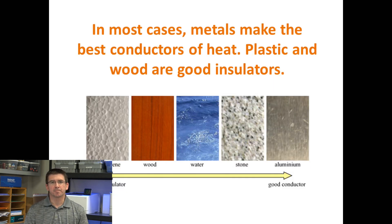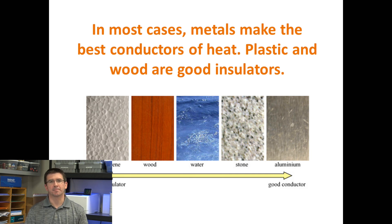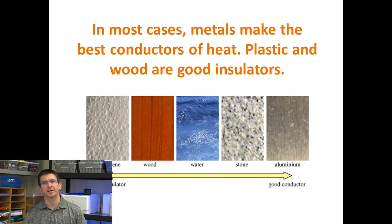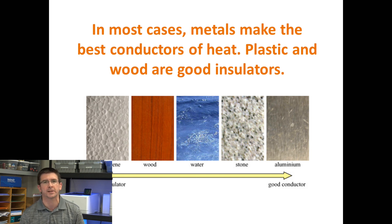In most cases, metals make the best conductors of heat, while things like wood and plastic make good insulators. Water is in the middle of our chart because in some cases it can conduct heat but it can also work to insulate. It is important to understand the different roles that conductors and insulators play in the transfer of heat, and the types of materials that work as good conductors versus good insulators.